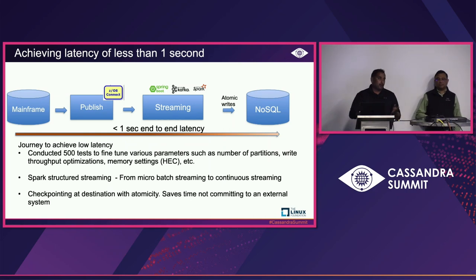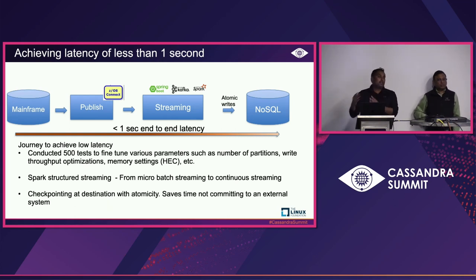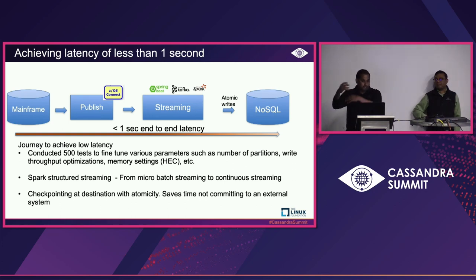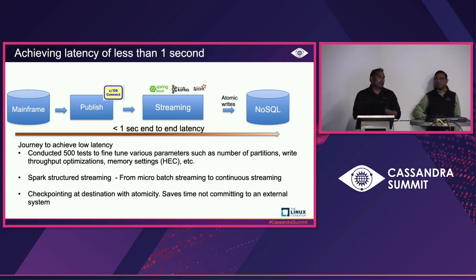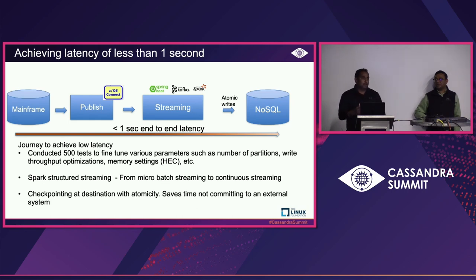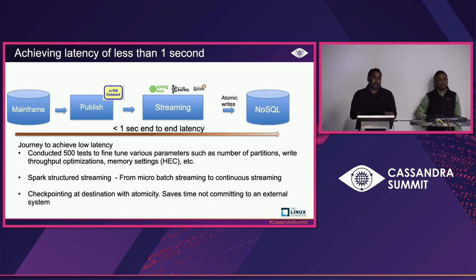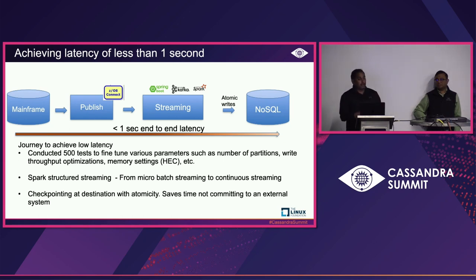Cassandra is the destination for checkpointing. Spark natively checkpoints to Hadoop or NFS as external systems, but Cassandra helped us here. Using Cassandra's atomic batching, we write both the data row and the checkpoint together, enabling high write throughput. We also modified some of the native Spark code to give us full control of checkpointing. When you want to replay events, we're not dependent on Kafka — it's completely decoupled. You can go back to Cassandra, update your offsets, and replay events. Combined, this brought us to under one second end-to-end latency.